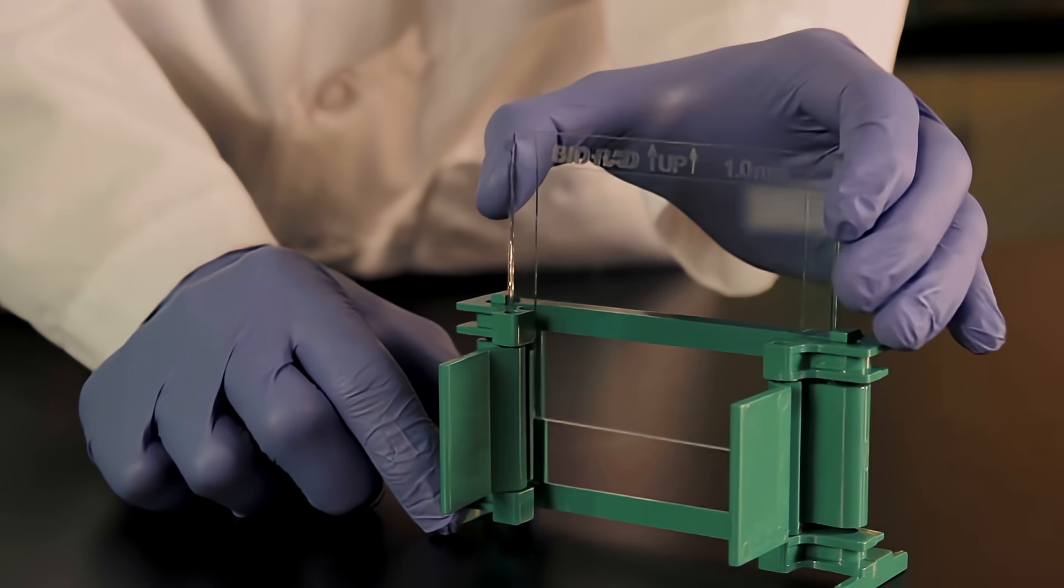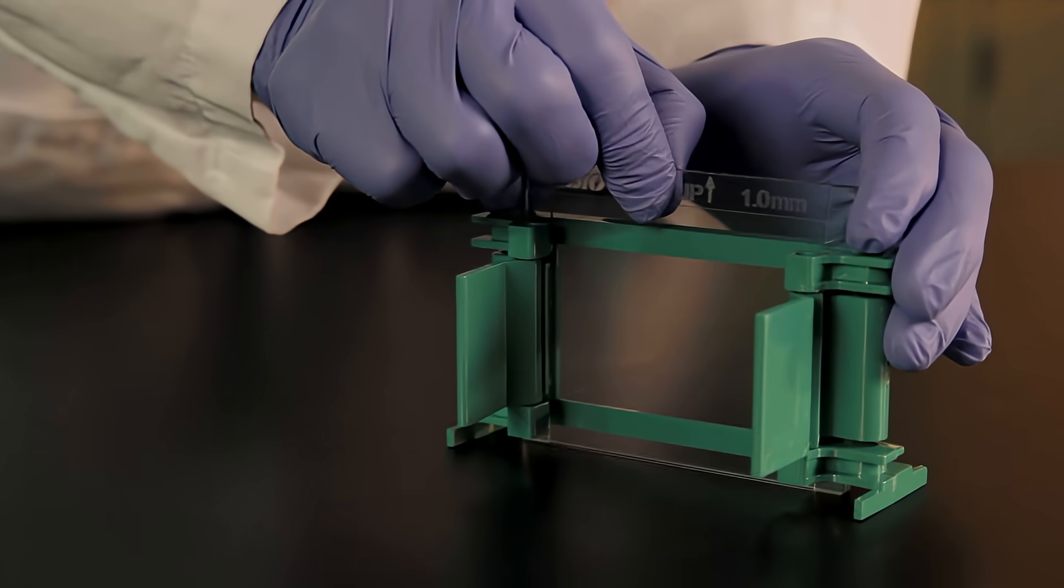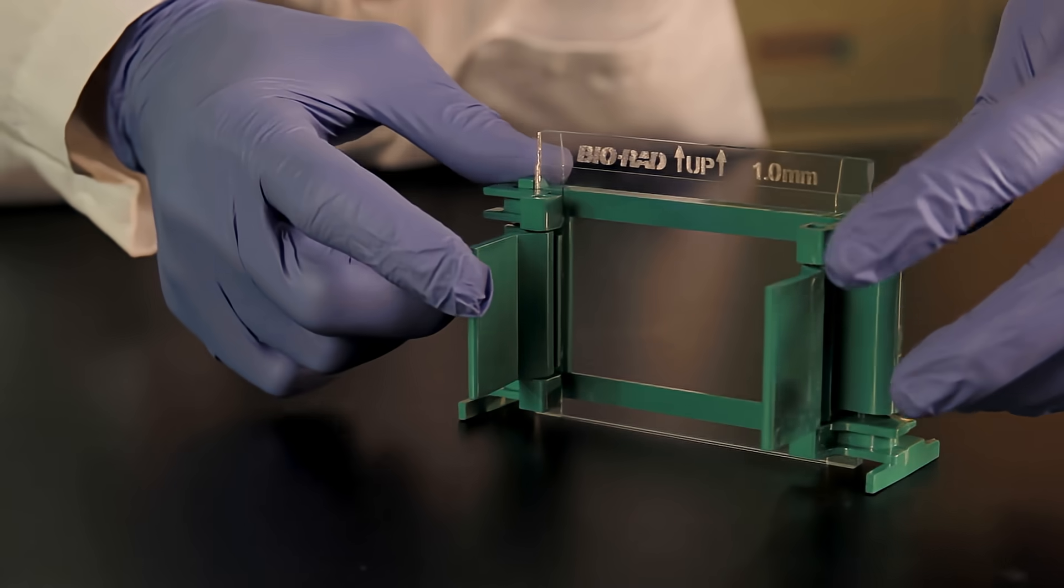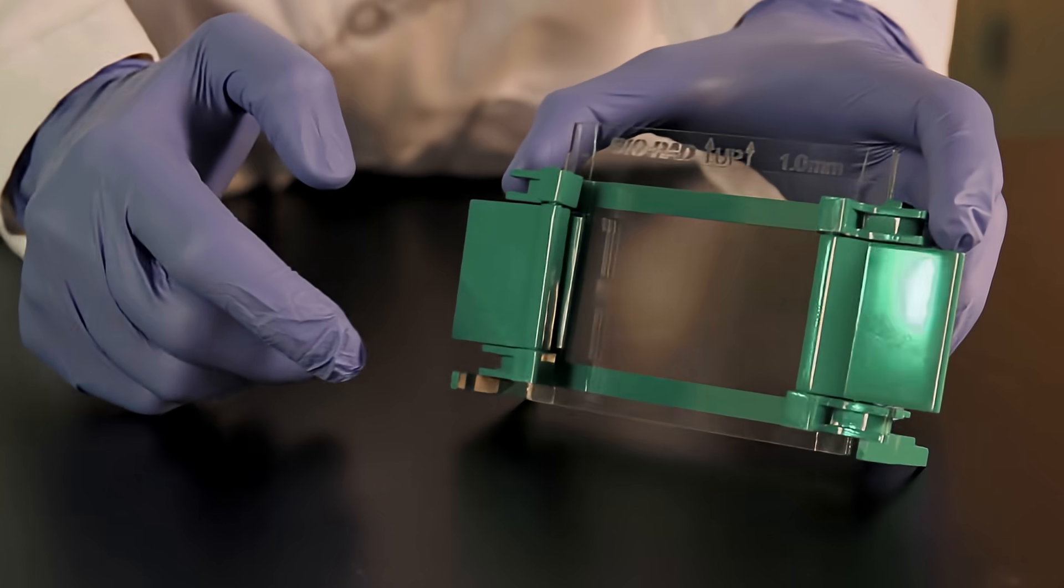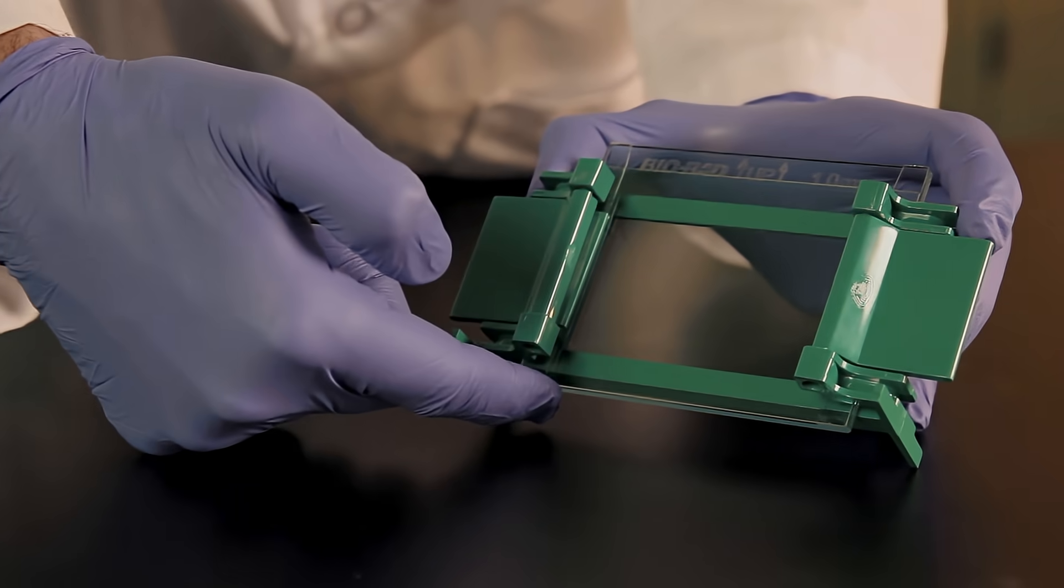Ensure that both plates are flush on a level surface to avoid leaking. Engage the pressure cams to lock the glass plates in place. Check once more that the bottom of both glass plates are flush.